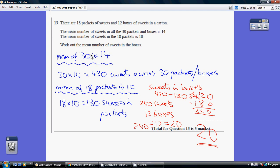So the total of these 30 is 30 times 14 which is 420. So we've got 420 sweets spread across the 30 packets and boxes.